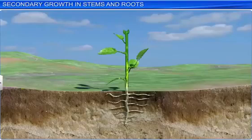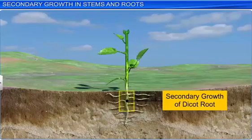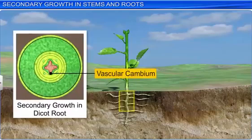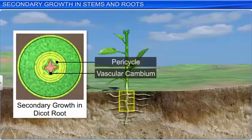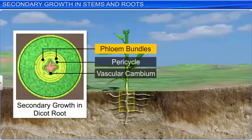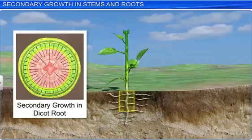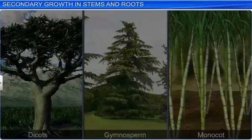Secondary growth in a dicot root is similar to that of a dicot stem. The vascular cambium develops from the pericycle tissue located just below the phloem bundles. Initially, the cambium ring is continuous and wavy, which later grows and becomes circular. Secondary growth of stems and roots occurs mainly in dicots.